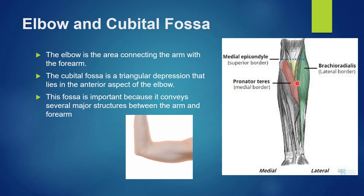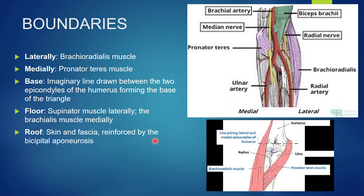This is the cubital fossa which lies on the anterior aspect of the elbow. This fossa is very important because it conveys several major structures between the arm and the forearm. Now we will see what are the boundaries of the cubital fossa.